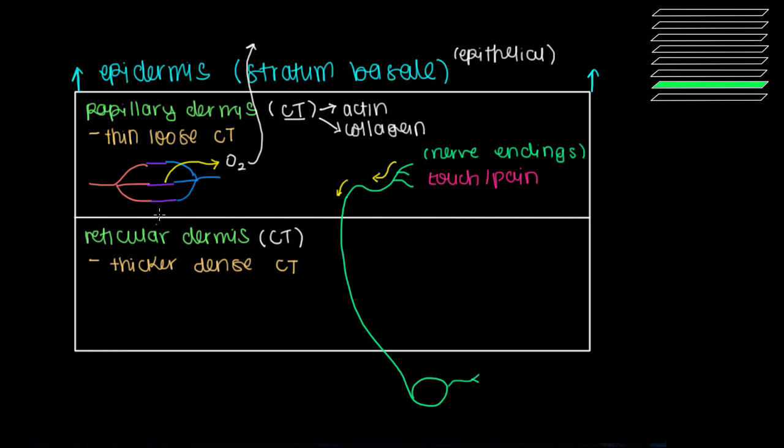Now as we get to the reticular dermis we'll see why it's important to have thick, dense connective tissue down here. And this connective tissue helps anchor things down. One of the things that you can have, and I'll sort of draw it like this ascending to your epidermis and so it leaks out over here, this is a gland.